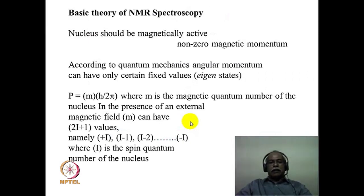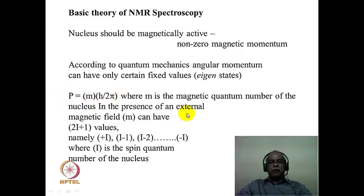We will now deal with the basic theory of NMR spectroscopy in a non-mathematical way. The nucleus must have a non-zero magnetic moment — it must be magnetically active. According to quantum chemistry, angular momentum can have only certain fixed values, given by P = m·(h/2π), where m is the magnetic quantum number. In the presence of an external magnetic field, the magnetic quantum number can take 2I+1 values, from +I to −I, where I is the spin quantum number of the nucleus.